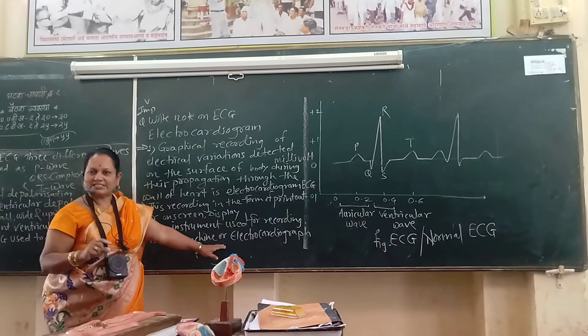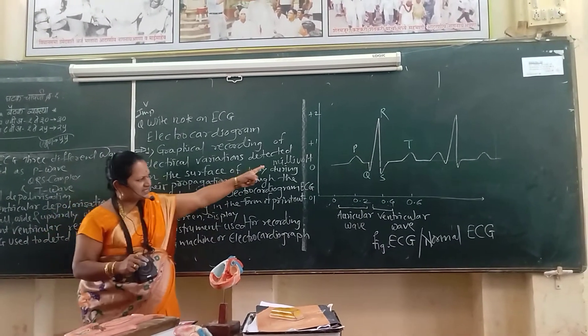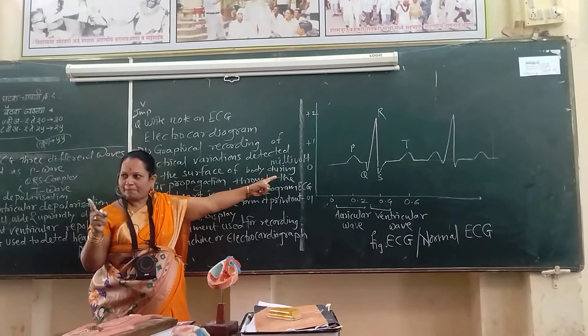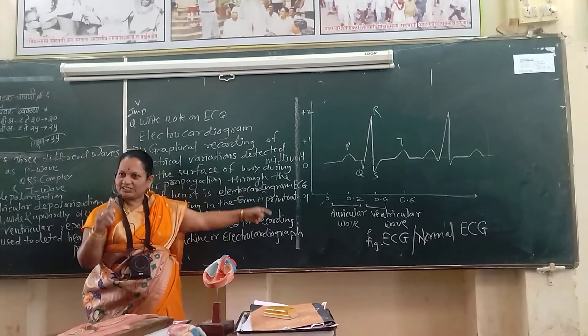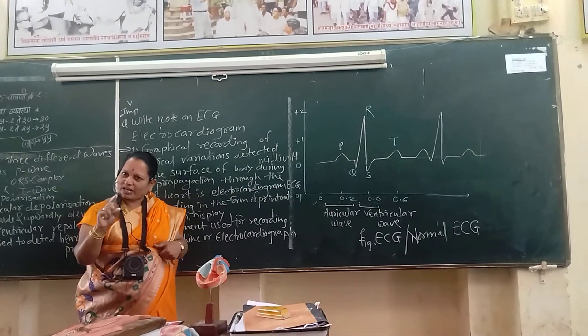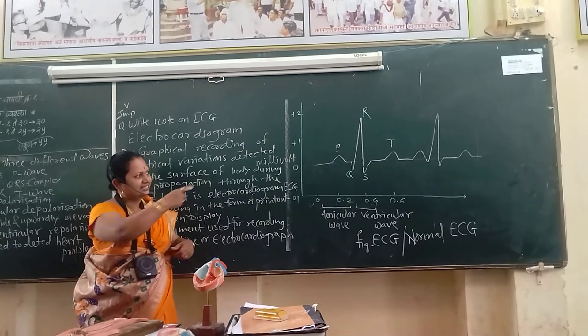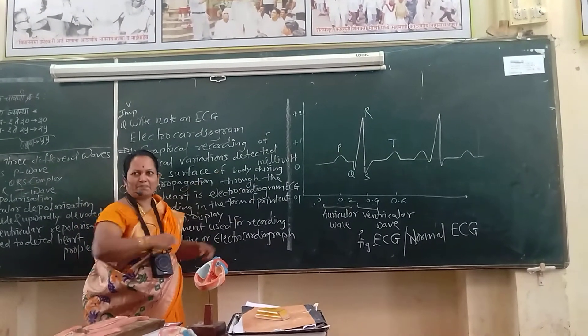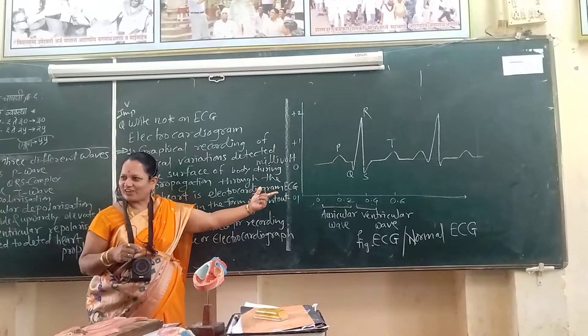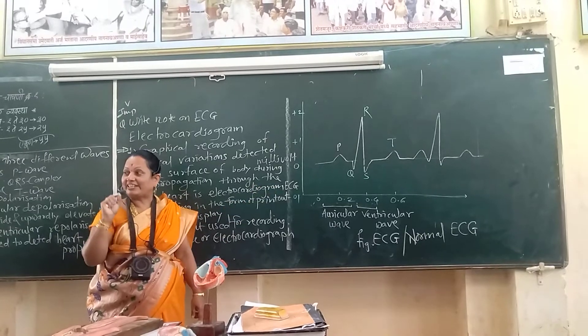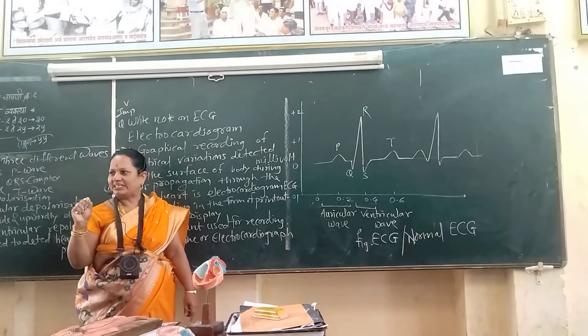To clarify: the machine used for recording is called the electrocardiograph, and the graph that is actually produced is called the electrocardiogram.